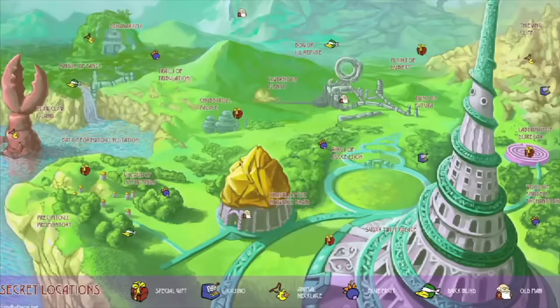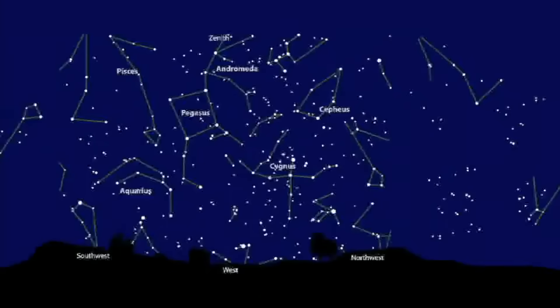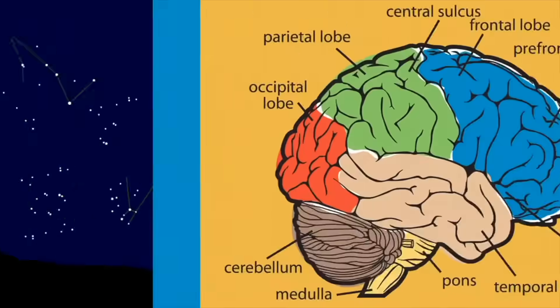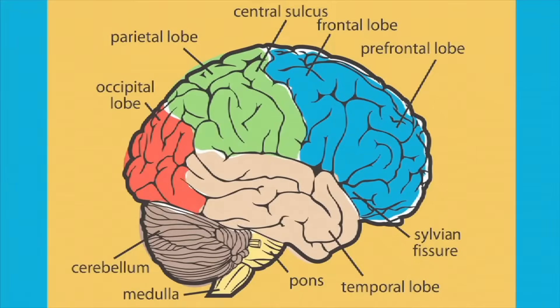There are video game maps. There are maps of outer space. There are even maps of the human brain. Since we probably won't be poking around the human brain any time soon, we'll focus today on common geographical maps.